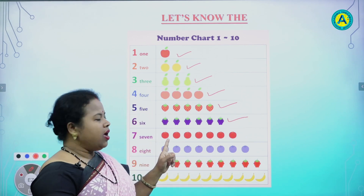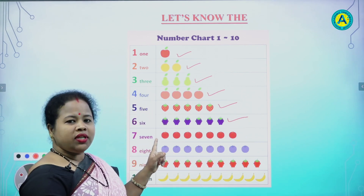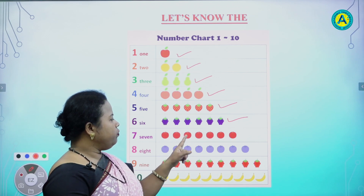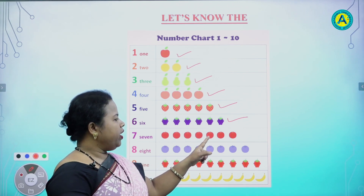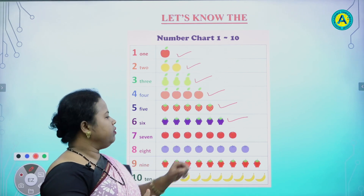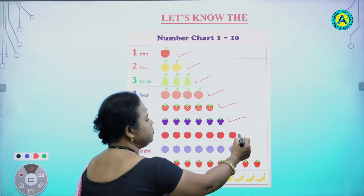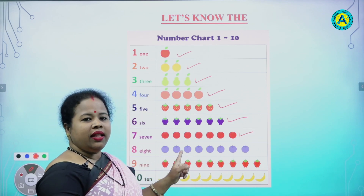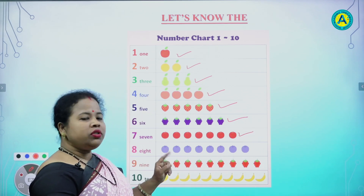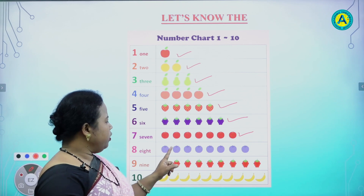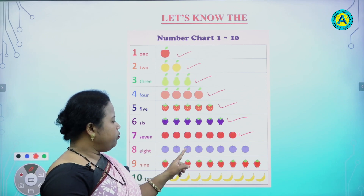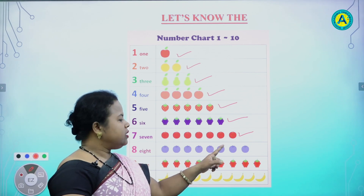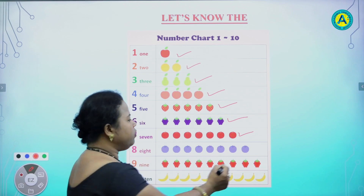In the seventh line, tell me, how many fruits are there? 1, 2, 3, 4, 5, 6, 7. Very good. In the eighth line, tell me, how many fruits are there? 1, 2, 3, 4, 5, 6, 7, 8. Very good.